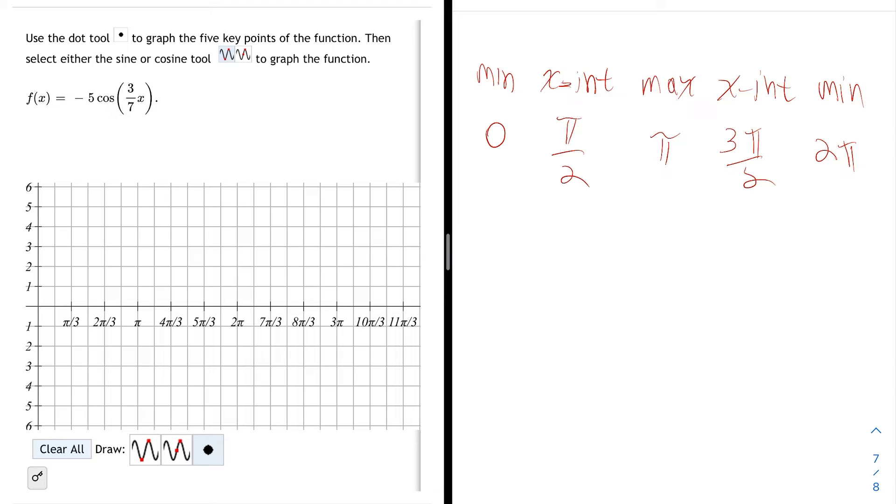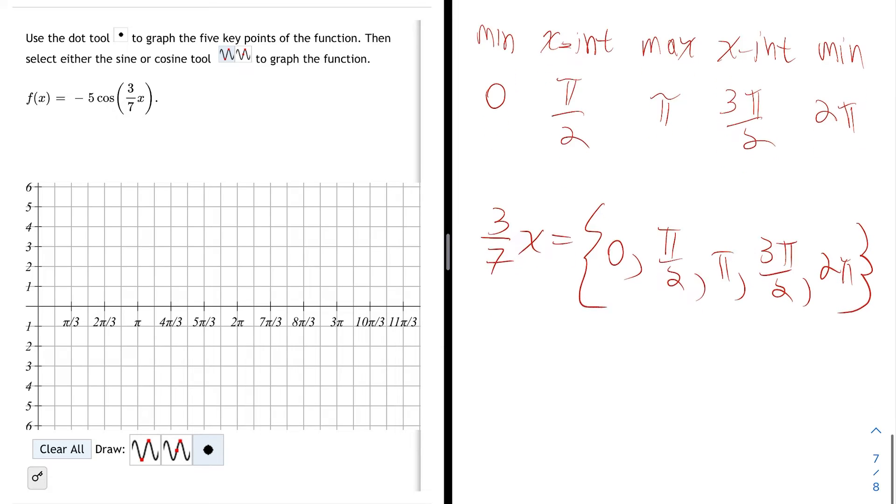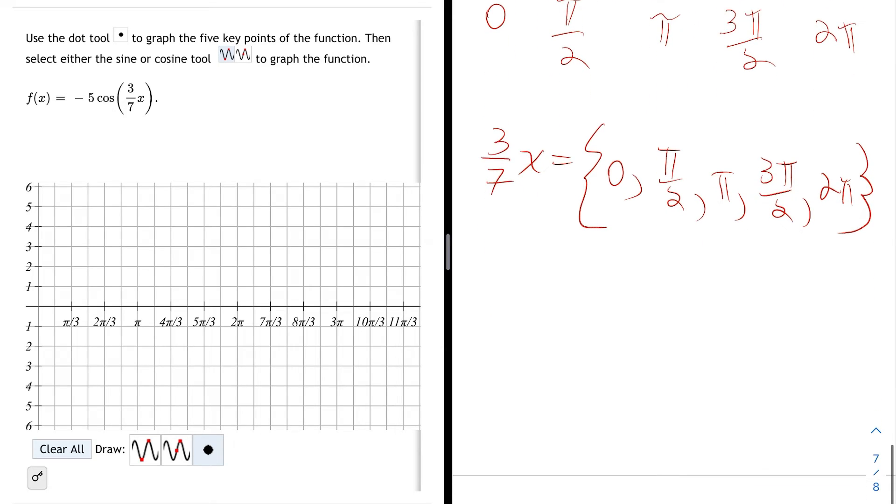But this is the cosine of 3/7ths x. So the angle is actually 3/7ths of x. And I need to know where that angle would be equal to either 0, π/2, π, 3π/2, or 2π, the quadrantal angles. So I can solve these 5 equations simultaneously.